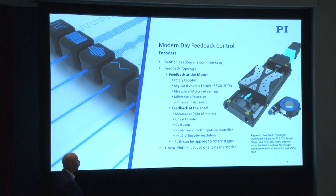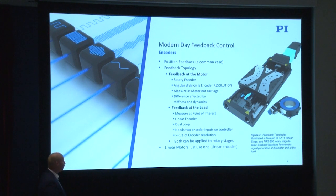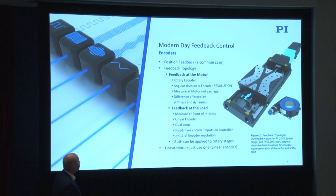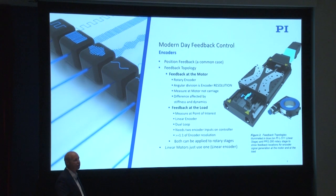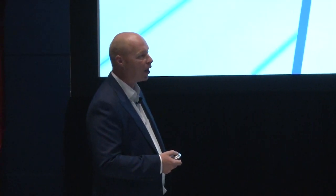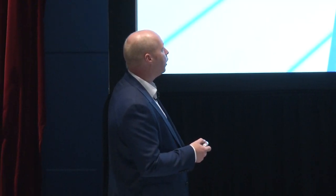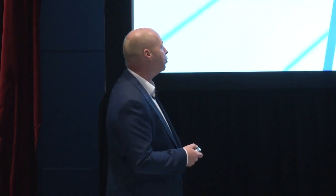When you have two encoders in the system, we refer to this as a dual loop. It needs two encoder inputs onto the controller, making the control system more complicated and potentially adding cost. One really important thing is that the resolution of the back encoder must be equal to or better than the front feedback system, because one becomes the velocity loop and the other the position loop. This principle also applies to rotary stages and linear motor stages.